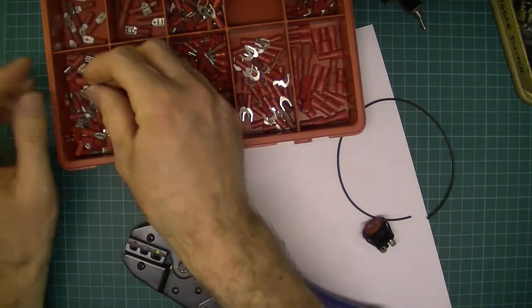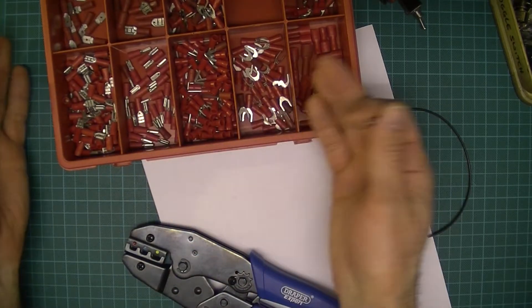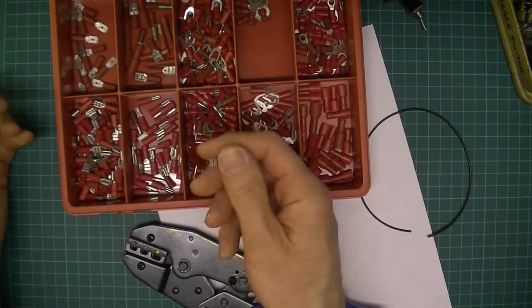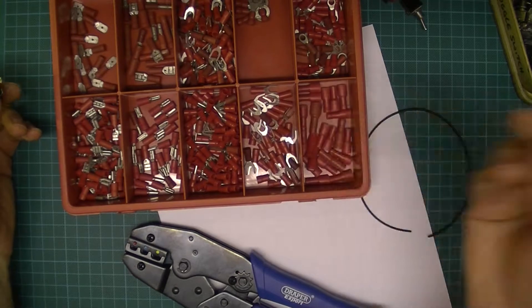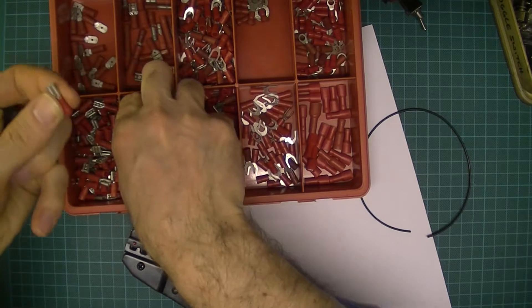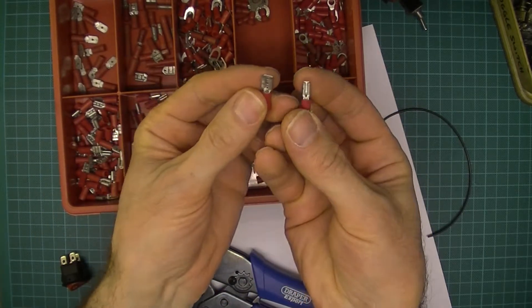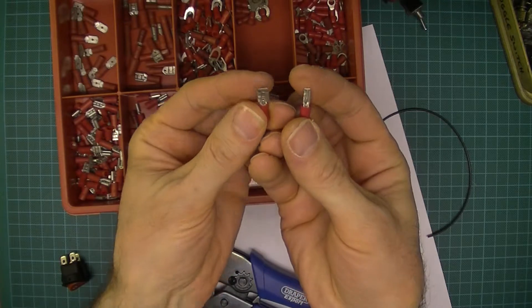Now crimp terminals are a type of mechanical fixing so there's lots of different types. This is a selection I've got at home, particularly the red type. There's also yellow and blue. Red's the only one of interest to us here, but there are different sizes. Don't know if you can make that out but one's much narrower than the other.